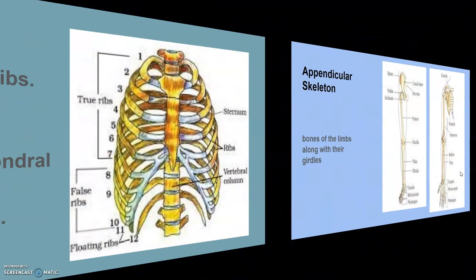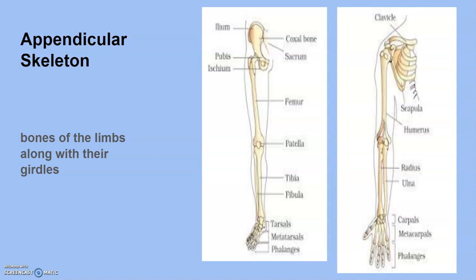Next is the appendicular skeleton. The bones of the limbs along with their girdles are called the appendicular skeleton. Each limb is made up of 30 bones. The bones of the forelimb include the humerus, radius, ulna, carpals, metacarpals, and phalanges. The carpals are the wrist bones — eight in number; metacarpals are the palm bones — five in number; and phalanges, also called digits, are 14 in number.